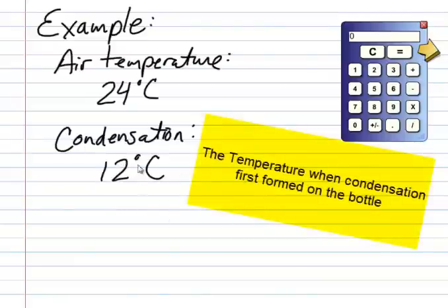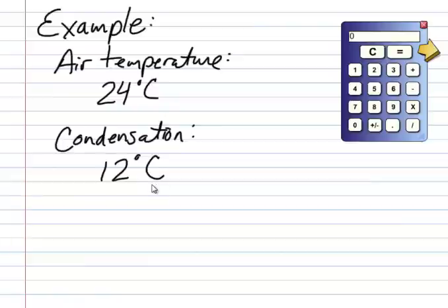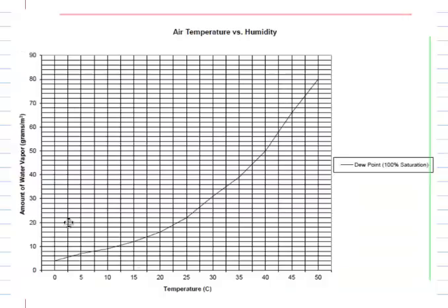So we know that the dew point in the classroom was 12 degrees. What we need to figure out is how much water was in the air at 24 degrees Celsius. So we'll take a look over here. You have this graph. It's both on the website and was handed out in class.